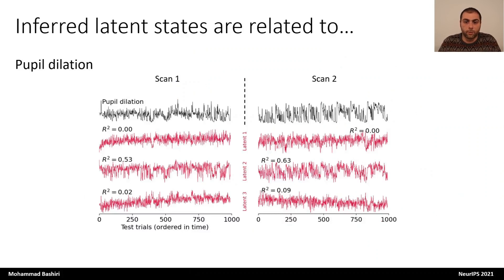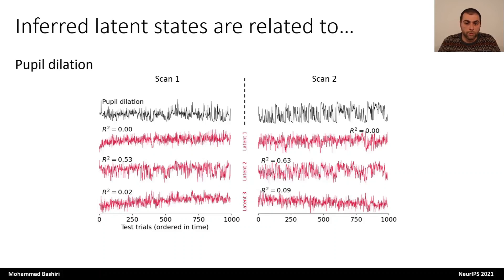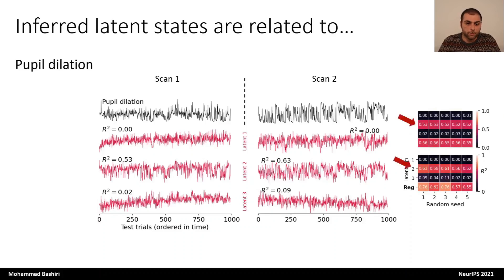Finally, we can look at the inferred latent states and see whether they are related to any of the behavioral variables — in our case, pupil dilation. Here you see the fluctuations of the pupil dilation in black and the inferred latent states in red. The latent dimensions are ordered based on the amount of shared variance they account for in the responses, so the first dimension accounts for the most shared variance. Looking at the results, the second latent dimension seems to be highly correlated with the pupil dilation, but the first dimension, which explains most of the shared variance, is not correlated with the pupil dilation at all. Surprisingly, this observation was consistent not only across the two datasets, but also across models trained with different random seeds. Combined with the observation that this first dimension has a global effect on the visual areas, the question is: what is this first dimension? However, answering that question was beyond the scope of this paper.